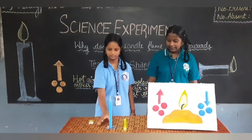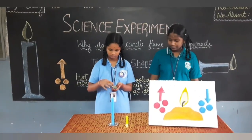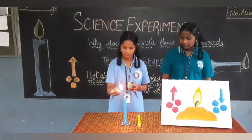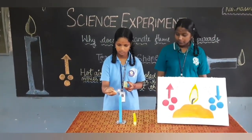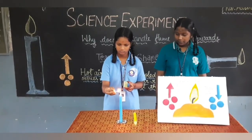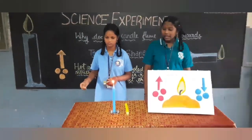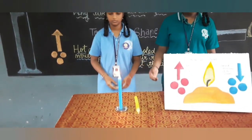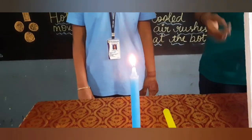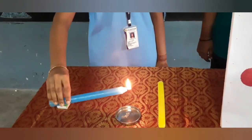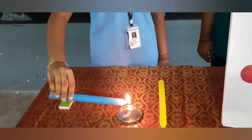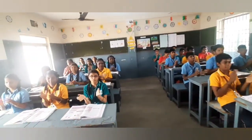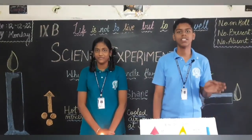Take a candle and light it. We can see the flame pointing in the upward direction. Even if you turn the candle upside down, the flame will point upward direction only. The question now is: why does a candle flame always point upward?